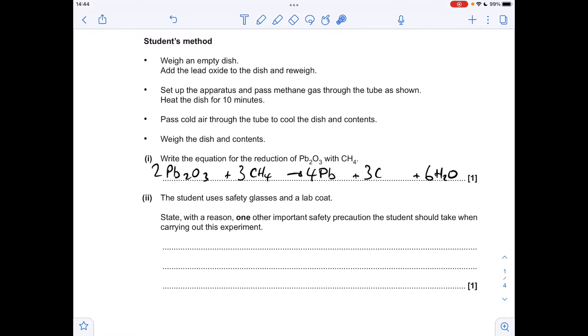Moving on to the next part, so another important safety precaution apart from safety glasses and lab coat. Well, the student's using methane to reduce the lead oxide. It's a flammable gas, so you need to keep that away from a naked flame. Another one you could have is down to the fact that you're using lead oxide, or you're making lead. It's obviously a toxic substance, and so therefore this would be neatly carried out either in a fume cupboard or somewhere with good ventilation.